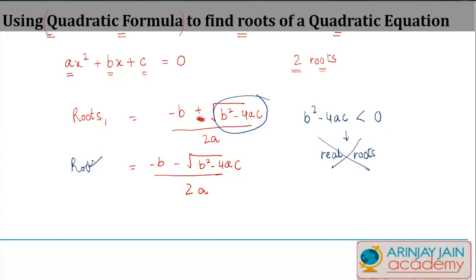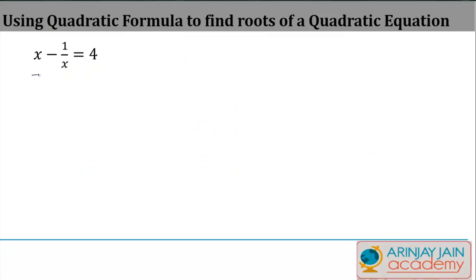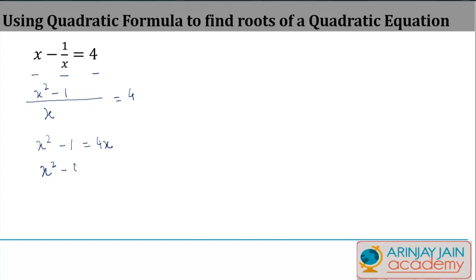Now let us look at an example to understand how this formula can be used. You are given x minus 1 upon x is equal to 4. If you take x as the LCM you get x squared minus 1 on the left hand side, equal to 4. This can be written as x squared minus 1 equals 4x, or x squared minus 4x minus 1 equals zero.